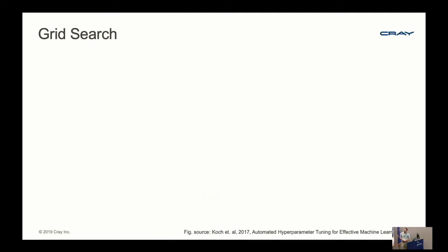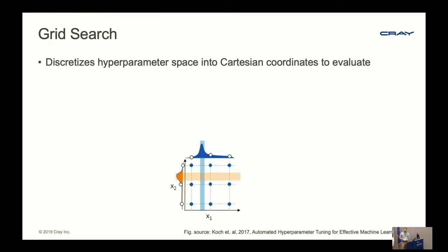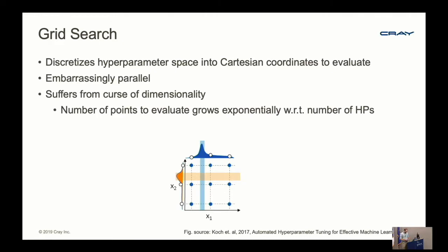First, grid search. Grid search, as you can probably infer from the name, is simply discretizing the hyperparameter space into Cartesian coordinates to evaluate. This is a naturally embarrassingly parallel problem. However, it suffers from the curse of dimensionality—the number of points you evaluate grows exponentially with respect to the number of hyperparameters. In deep learning we have a large number of hyperparameters, so grid search would require severely limiting what you search.